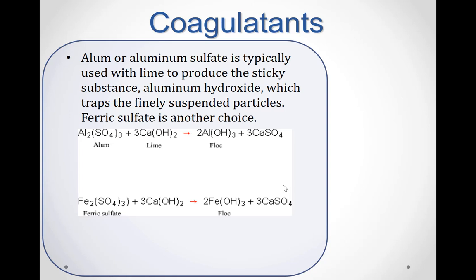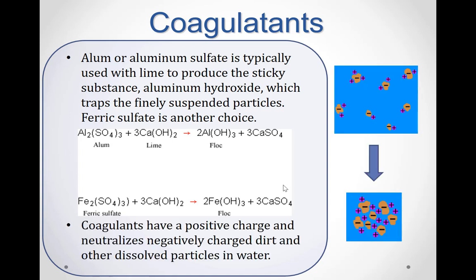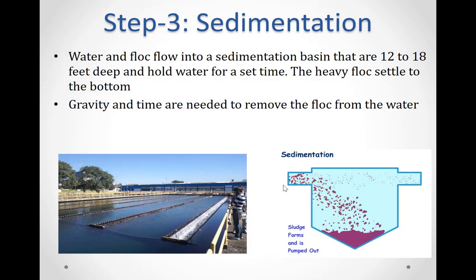Aluminum hydroxide is a sticky gel that traps finely suspended particles, as illustrated in the figure. Step three is sedimentation. During sedimentation, floc settles to the bottom of the water supply due to its weight. In this step, water and floc flow into a sedimentation basin that is 12 to 18 feet deep and holds water for a set time. Gravity and time are needed to remove the floc from the water.